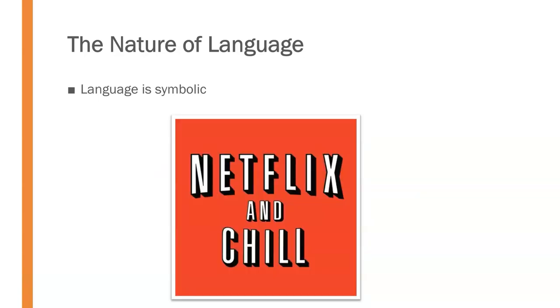The symbolic nature of language is further illustrated by expressions like Netflix and chill, which have meaning in the arrangement of the letters and words, but then also have a further broadly understood secondary meaning represented by the expression.